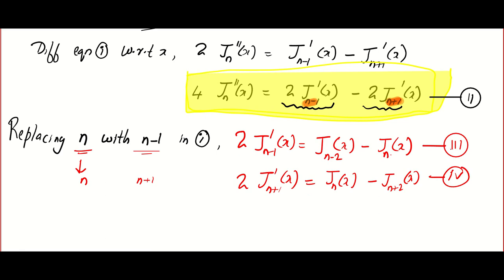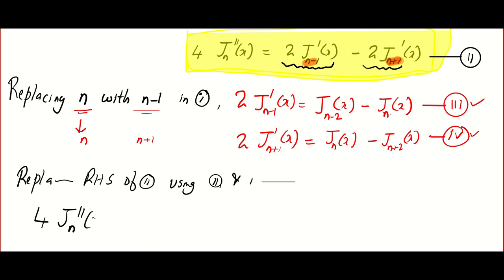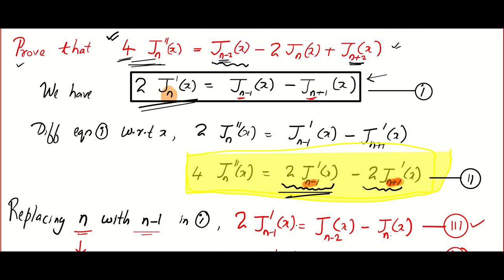Now it's almost done. All you have to do is plug equation 3 and equation 4 into equation 2. So, replacing the right-hand side of equation 2 using equations 3 and 4, we get: 4Jn''(x) = J(n-2)(x) - Jn(x) - [Jn(x) - Jn+2(x)]. This becomes positive and the two Jn terms give minus 2Jn, so I'm leaving that simplification for you.